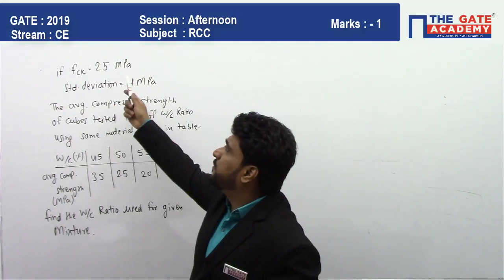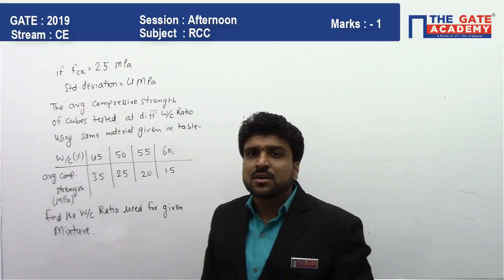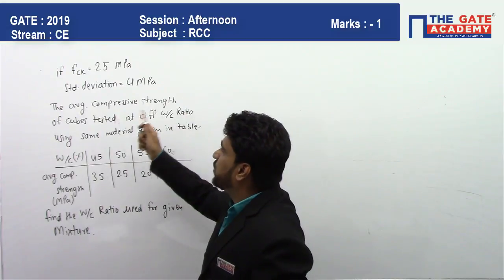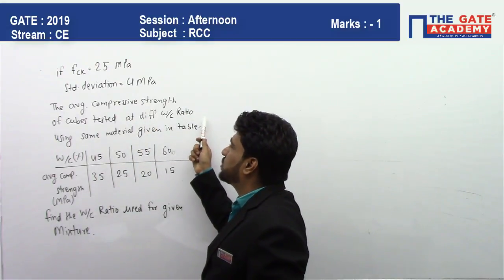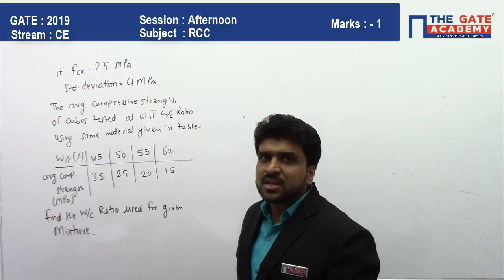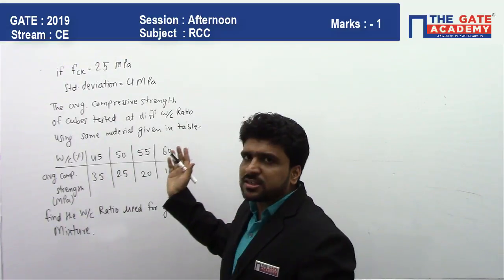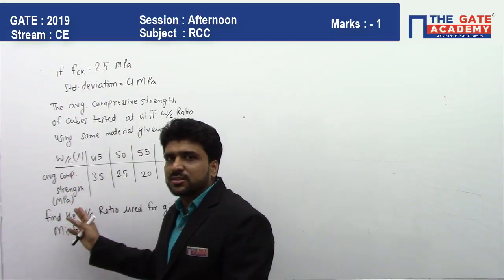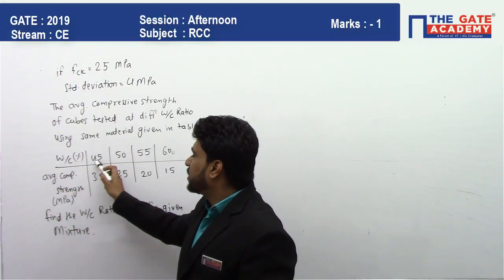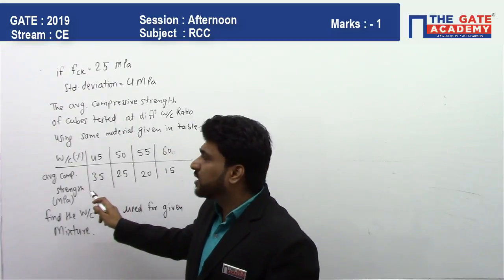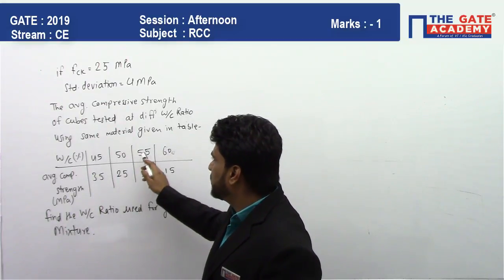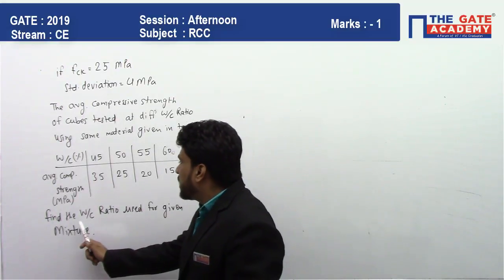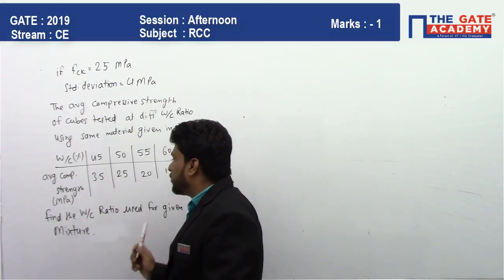We need to make a mixture of M25 with the standard deviation we found is 4 MPa. Now the average compressive strength of cubes tested at different water to cement ratios using the same material is given in a table. They have done some other tests also at other water to cement ratios and found the average compressive strength values. At water content 45%, the average compressive strength is 35; at 50% it is 25; 55% it is 20; and 60% it is 15.